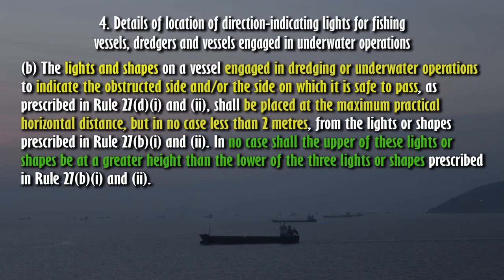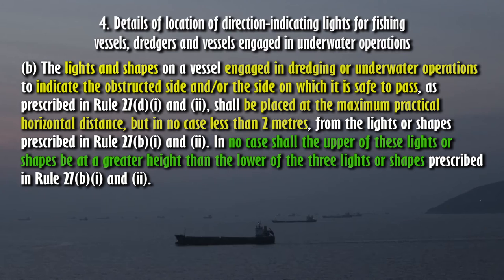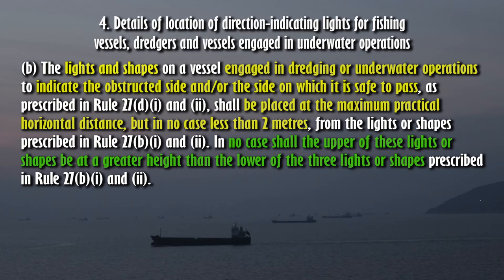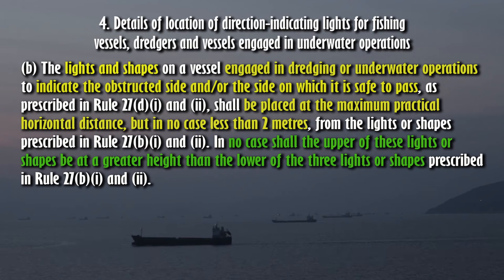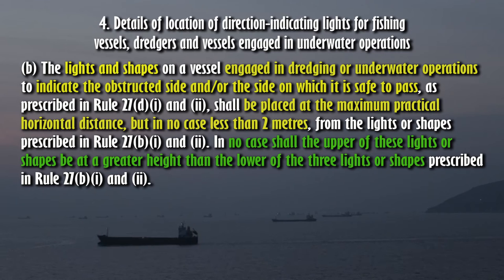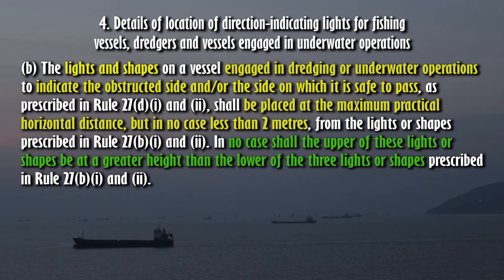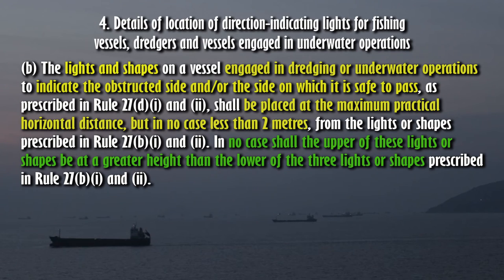(B) The lights and shapes on a vessel engaged in dredging or underwater operations to indicate the obstructed side and/or the side on which it is safe to pass, as prescribed in Rule 27(D)(1) and (2), shall be placed at the maximum practical horizontal distance, but in no case less than 2 meters from the lights or shapes prescribed in Rule 27(B)(1) and (2). In no case shall the upper of these lights or shapes be at a greater height than the lower of the three lights or shapes prescribed in Rule 27(B)(1) and (2).